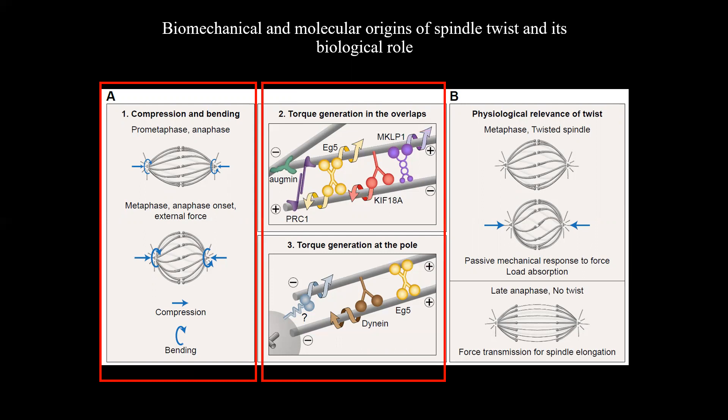EG5, KIF18A, MKLP1, and dynein, all of these motors exert torque on the microtubule in vitro. Given that the first three motors are found within the anti-parallel overlaps of bridging microtubules in the spindle, we suggest that they generate the twisted shape of a bundle by rotating the anti-parallel microtubules within the bundle around each other, whereas dynein acts through microtubule rotation close to the spindle pole.